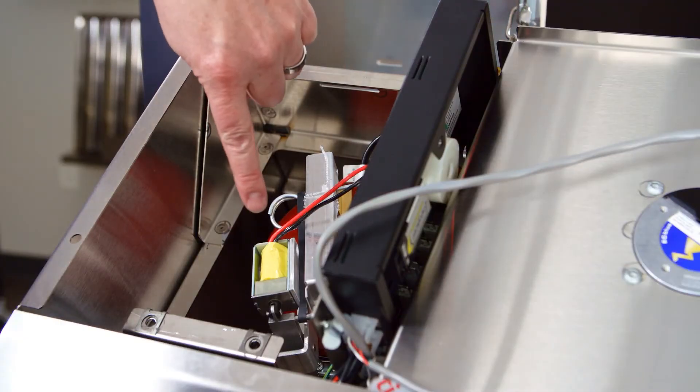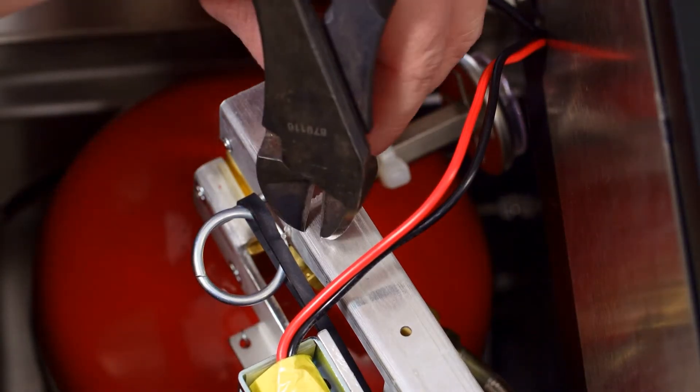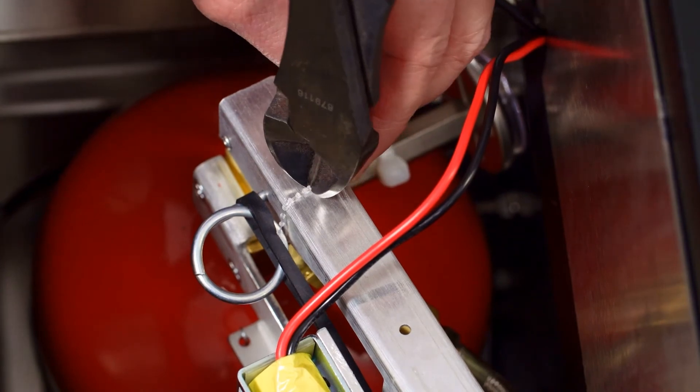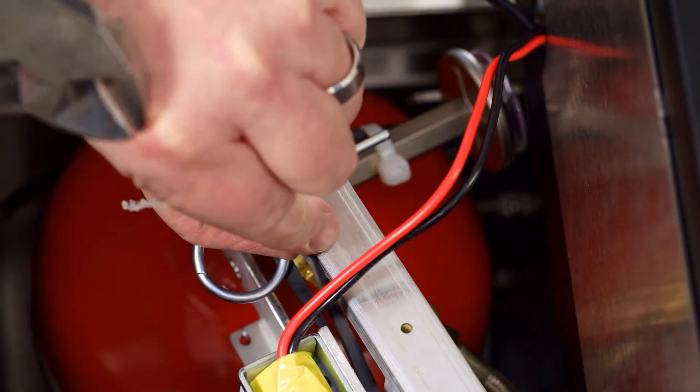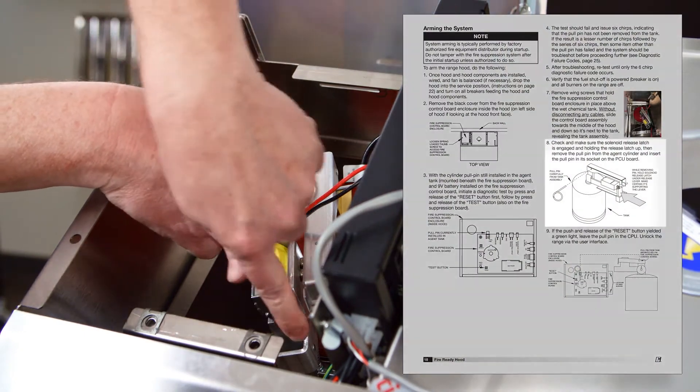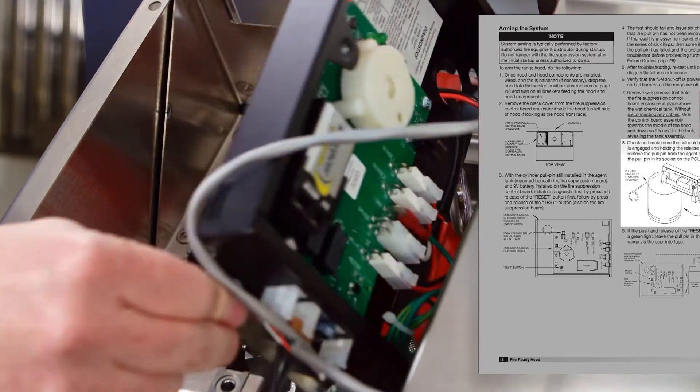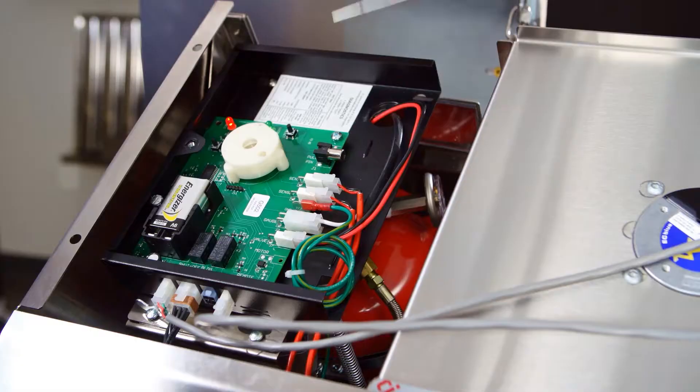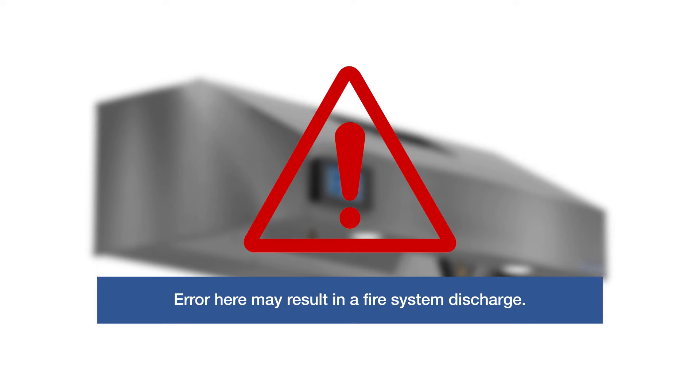Check and make sure the solenoid release lever is engaged and holding the release latch up. Then carefully remove the pull pin from the suppression tank. Insert the pull pin into its socket on the control board. Once the pin is removed, the fire system is armed, so pay close attention when performing this step as an error here may result in a fire system discharge.